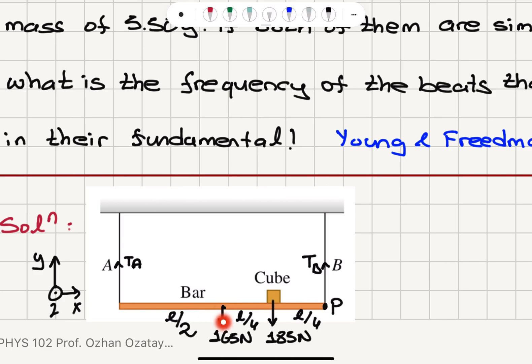We have 165 Newton's weight and three-fourths of the way from A, so at a distance of L over 4 from point P, we have the cube, 185 Newtons.